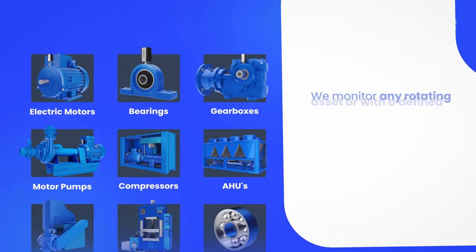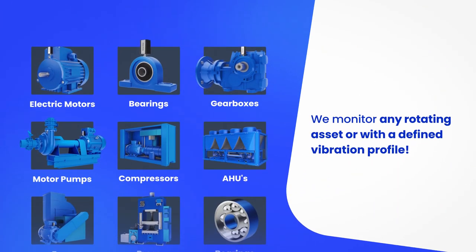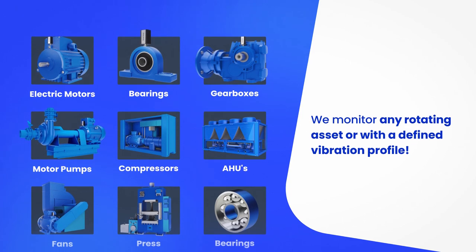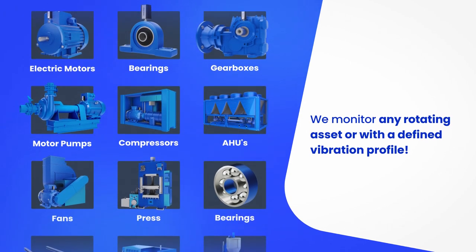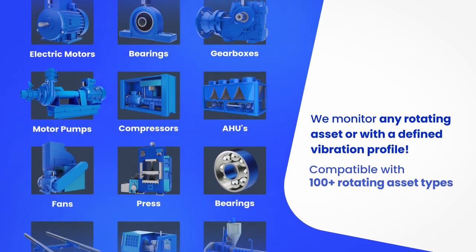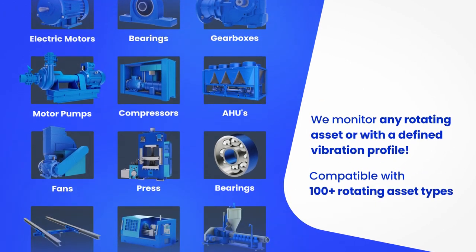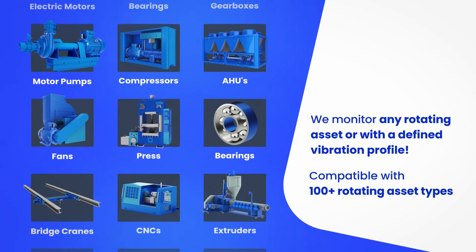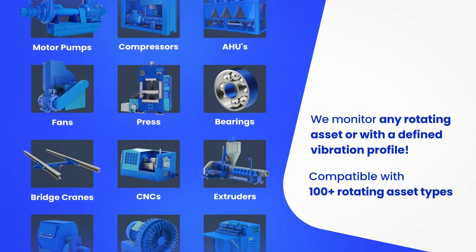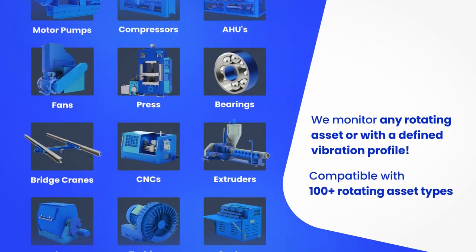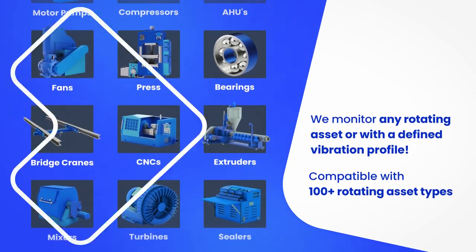If you have critical equipment in your operation that wasn't listed here, don't worry — our system can monitor any rotating asset or any other machine with a defined vibration profile. Altogether, there are more than 100 types of assets, machines, and equipment that we can monitor.